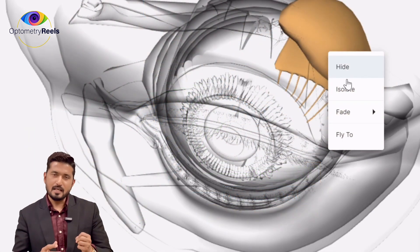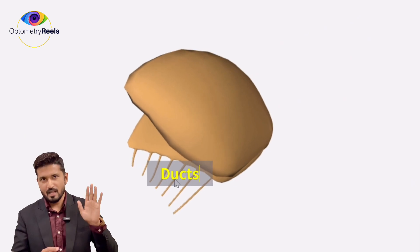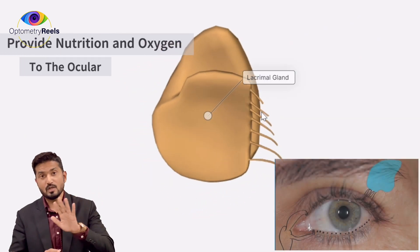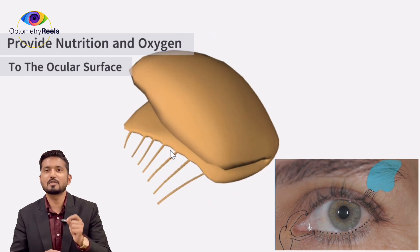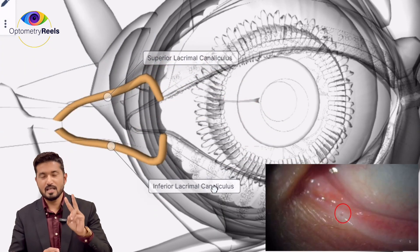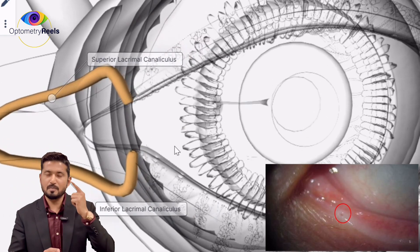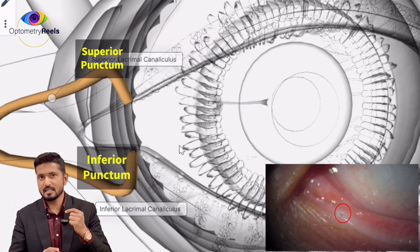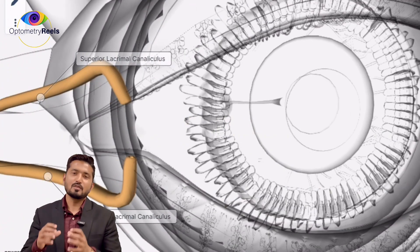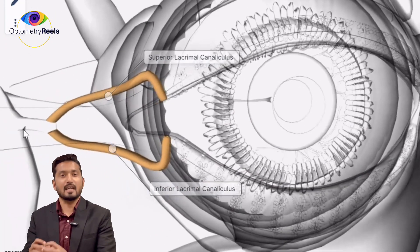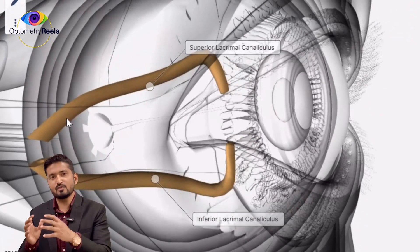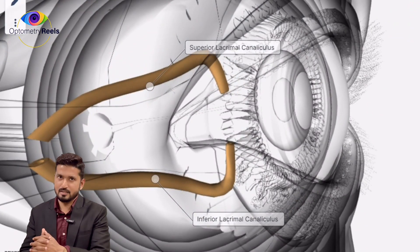The tears from the lacrimal gland enter the lacrimal duct, nourishing and providing nutrition and oxygen to the ocular surface, and reach the punctum — one of the important parts of the apparatus. There are two puncta: one superior and one inferior. The punctum is the opening of a duct known as a canaliculus. There are two canaliculi — superior and inferior — and together they form a common canaliculus.